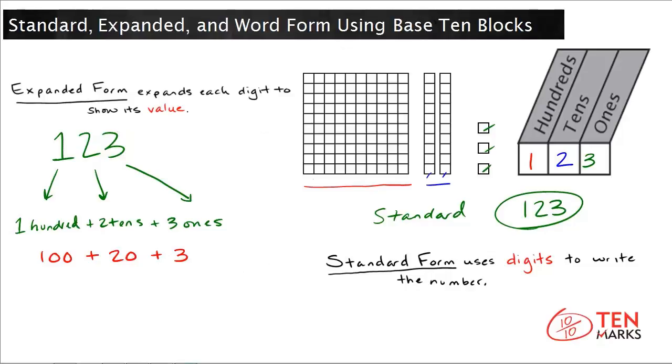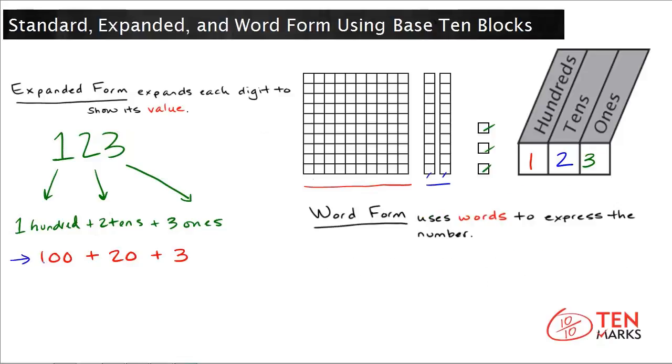Now, let's write the word form of the expanded form that you have here. So if you have 100, the word form is like this, one hundred. If you have 20, the word form for 20 looks like this. And lastly,